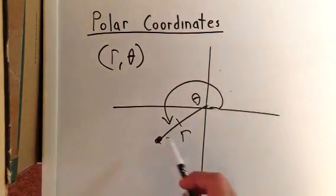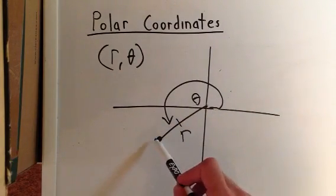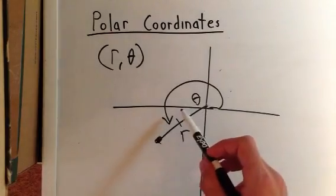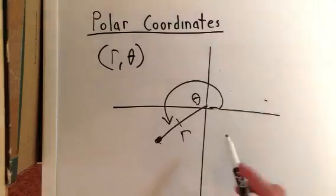So r is the distance from the origin to the point, and θ is the angle between the polar axis and the line segment.